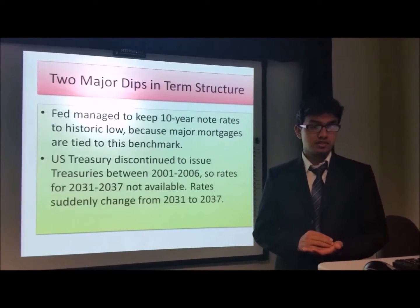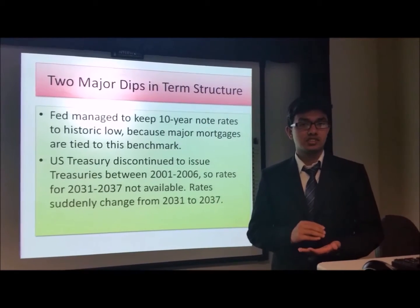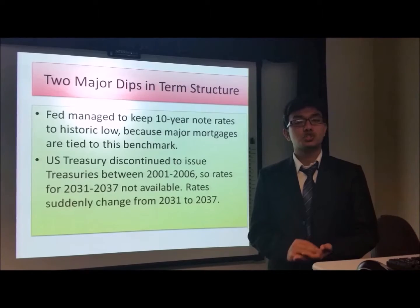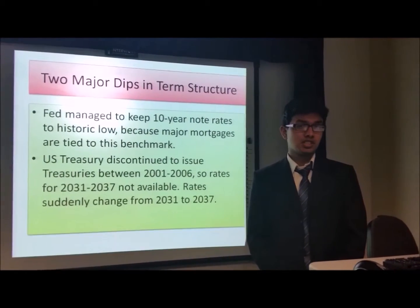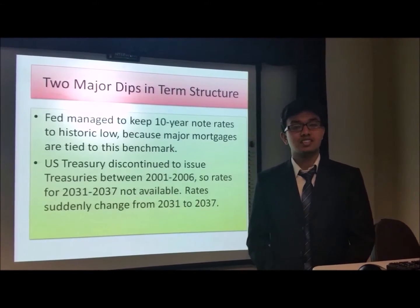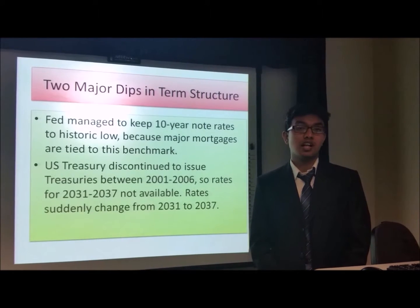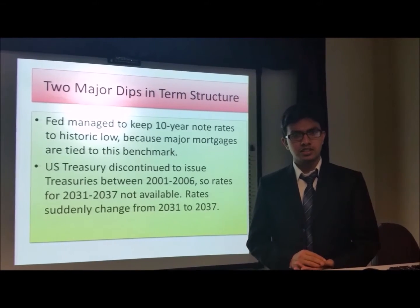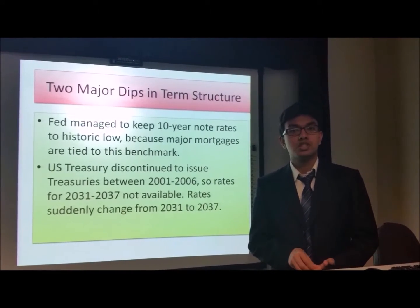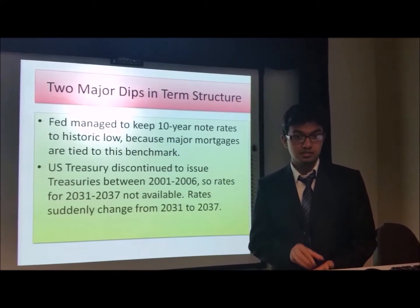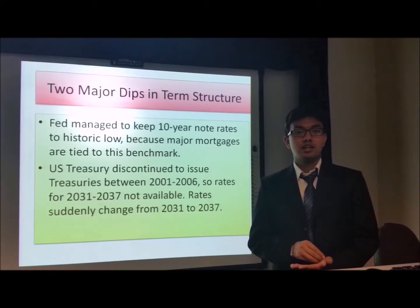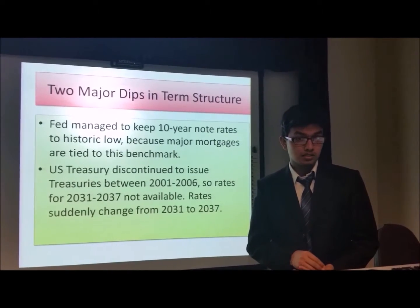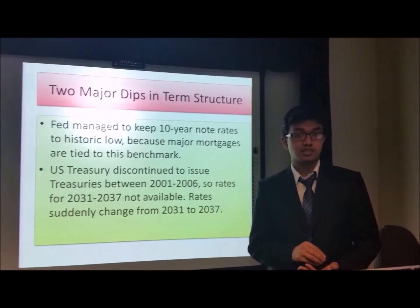The first dip is for the rate for the 10-year Treasury note. The Federal Reserve has managed to keep that rate historically low to stimulate the economy, to enhance the volume of spending, and to help the labor markets. The other dip is for the years from R16 to R23, for which we don't have any rates available because Treasury discontinued issuing notes and bonds from 2001 to 2006.